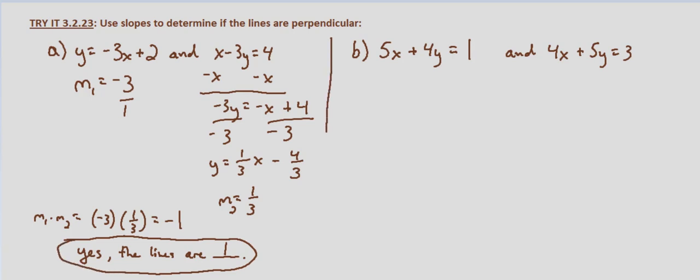Now with part b, neither equation is in slope intercept form. Subtract 5x from both sides. That leaves us with 4y equals negative 5x plus 1. Divide both sides by 4 and we get y equals negative 5 fourths x plus 1 fourth. With this the slope is negative 5 fourths.